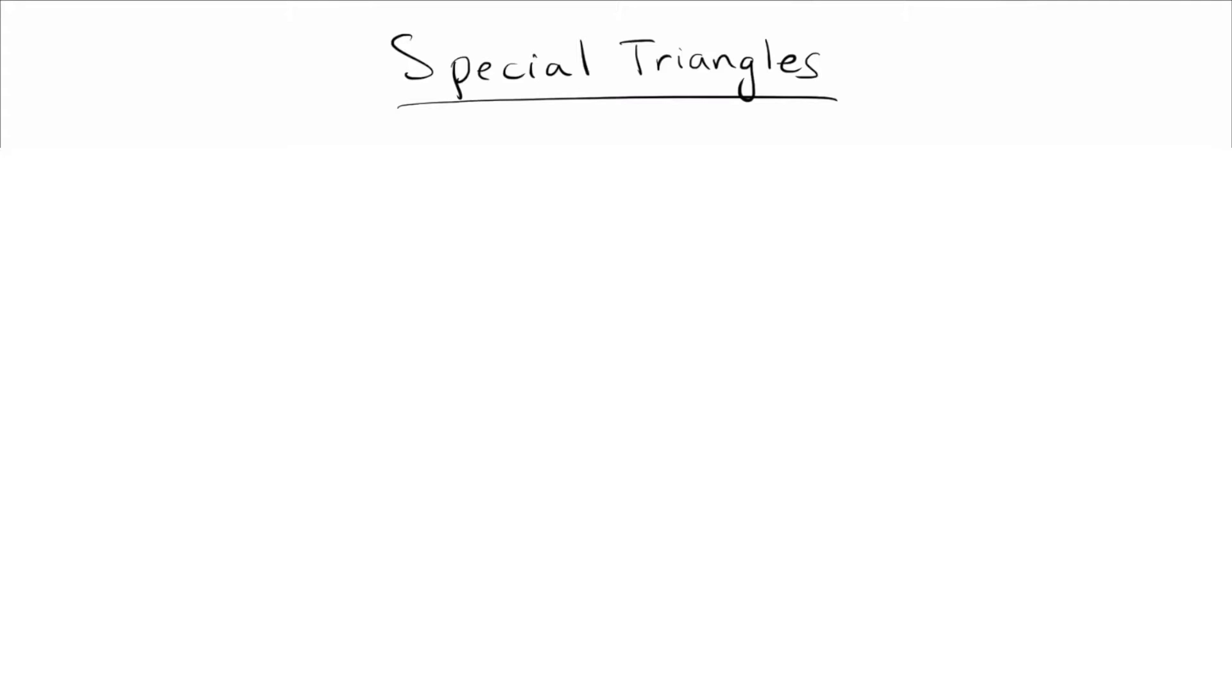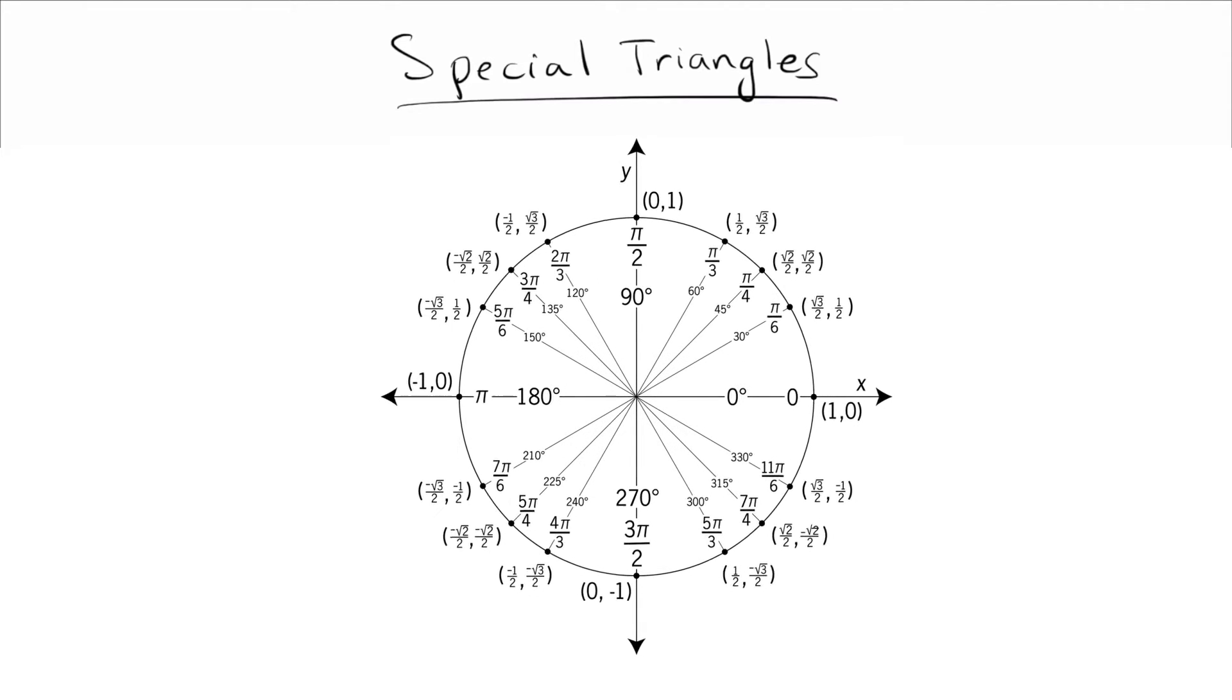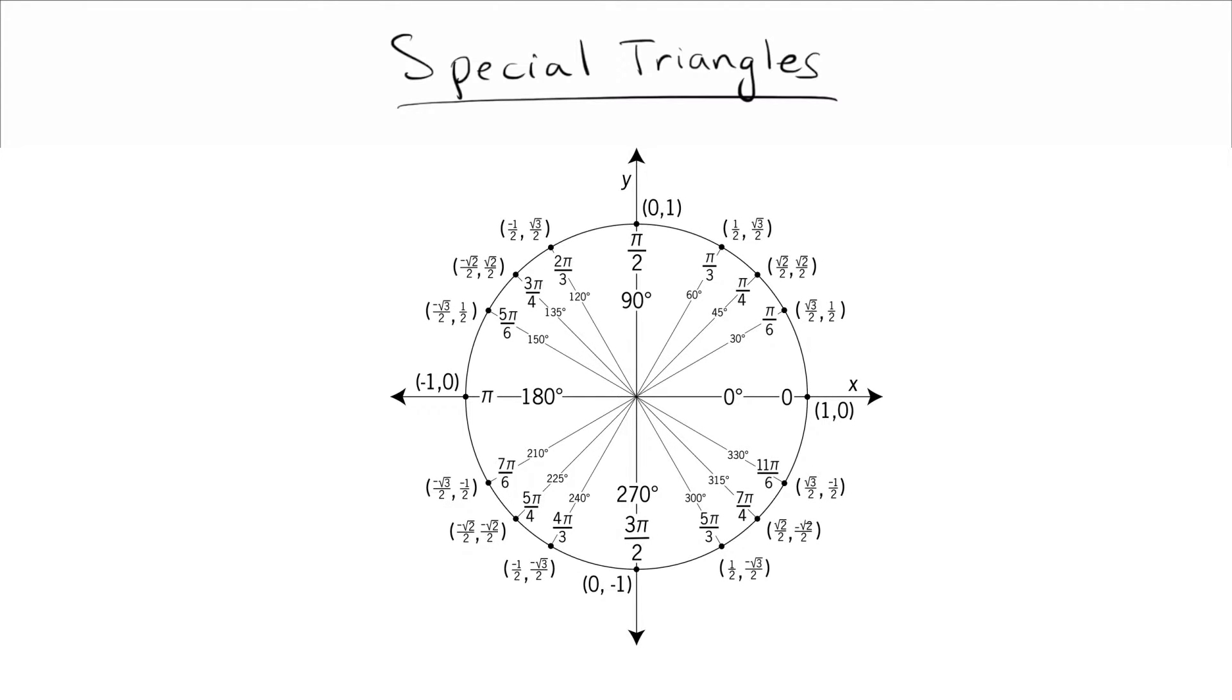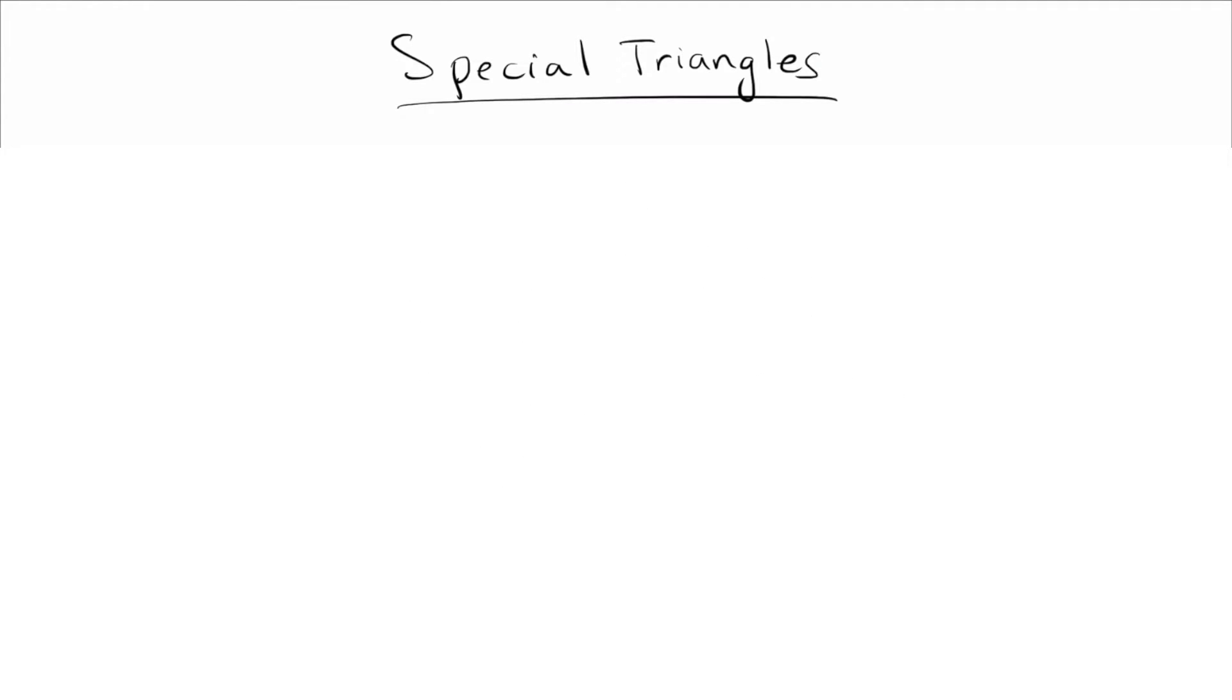For a lot of people, when they first start learning trig, one of the first things they have to do is memorize the unit circle, as you see here. And that's really too bad because that is a huge waste of time. There's far simpler ways to do all the same things you would do when you have the unit circle memorized. So in this video, we'll talk about that. And really, all it boils down to is learning two triangles. We call them the special triangles.